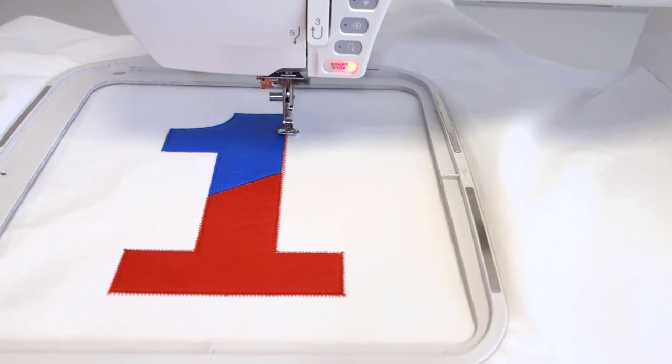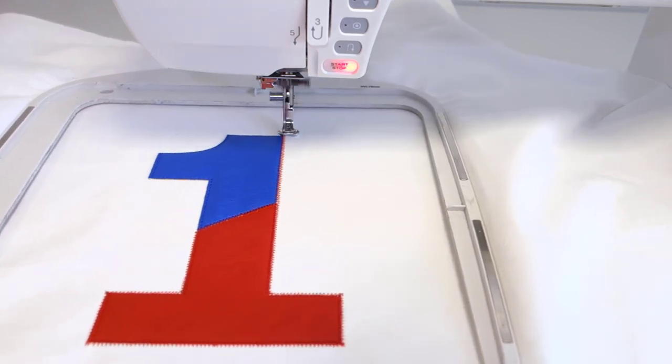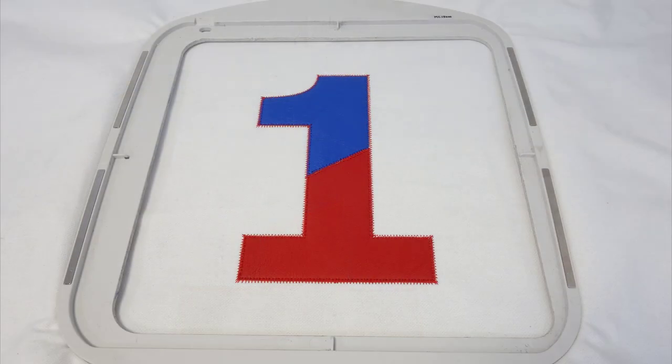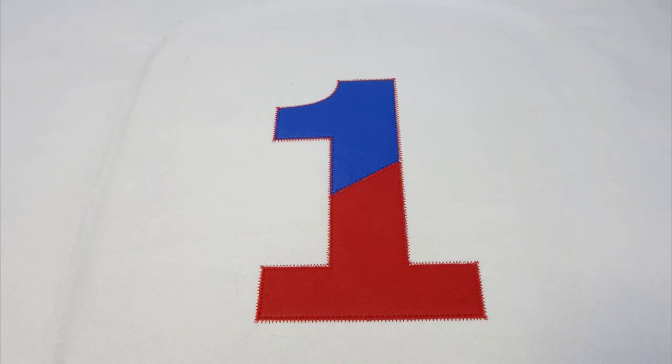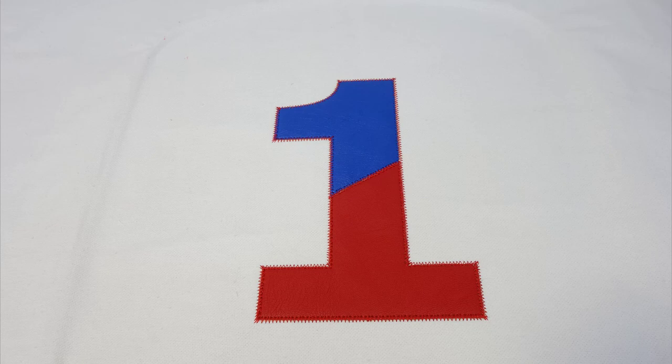Finally comes the satin serial to neatly cover the edges. Our applique is ready. Remove the hoop from the machine and tear off the stabilizer carefully.